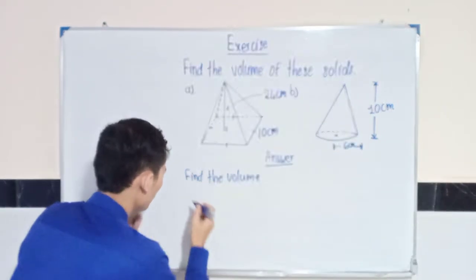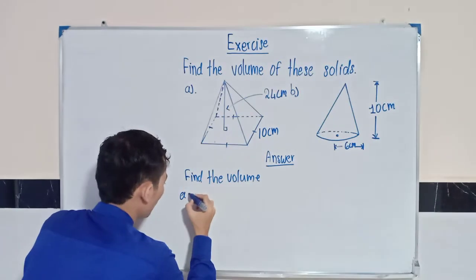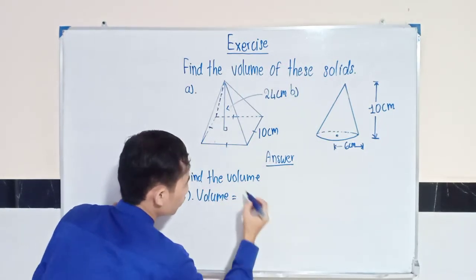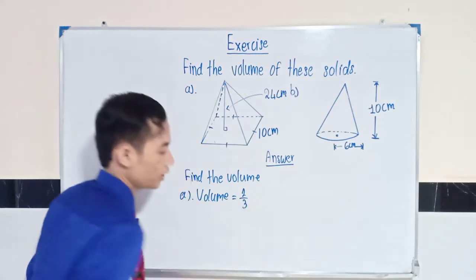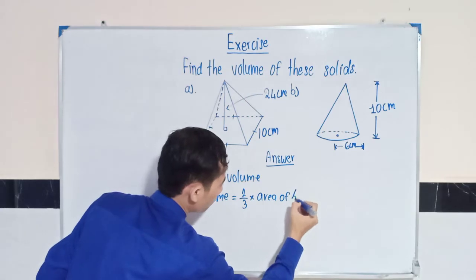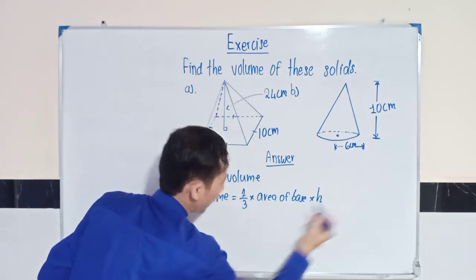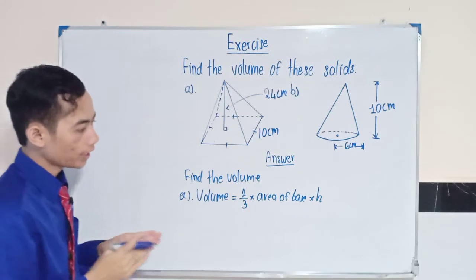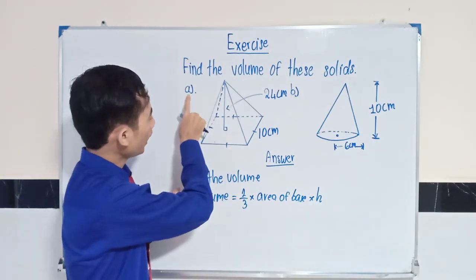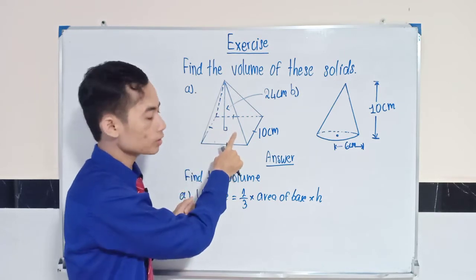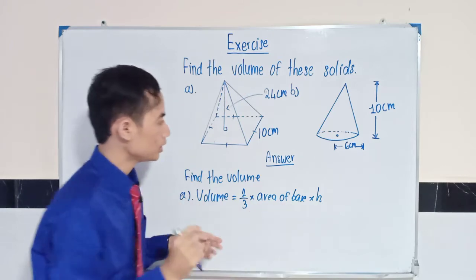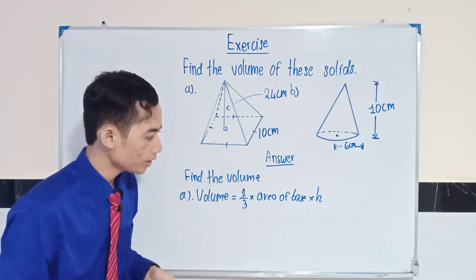Now we know that volume A is equal to 1 over 3 multiplied by area of base multiplied by height. And now we know that area of base. We know that the base is square, so we can say area of base is equal to area of square.